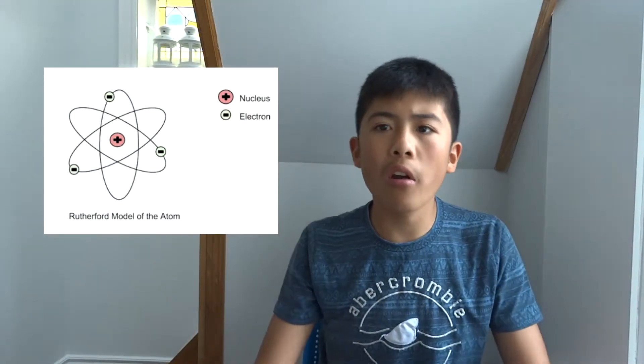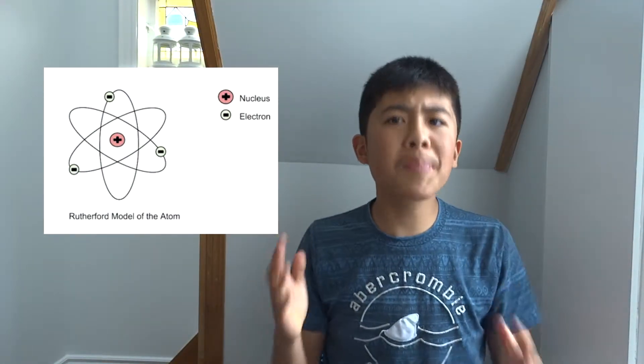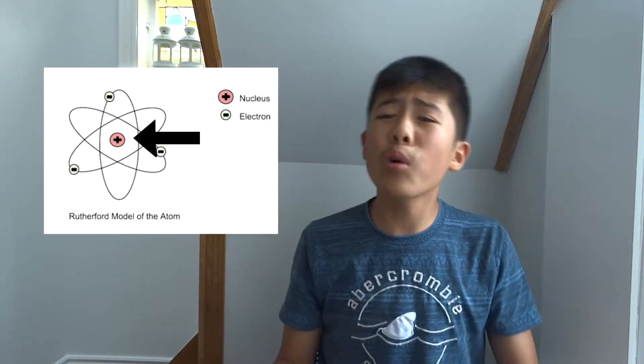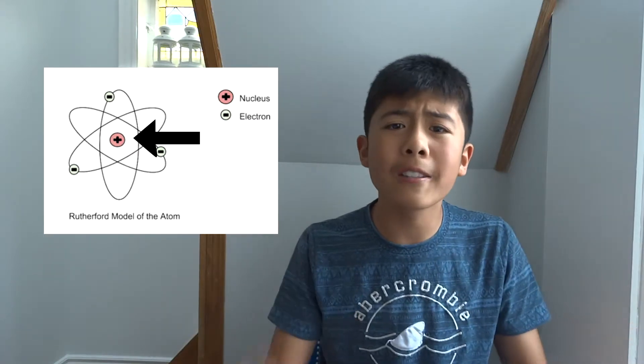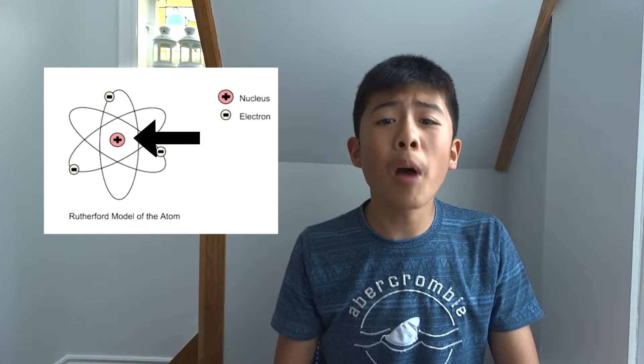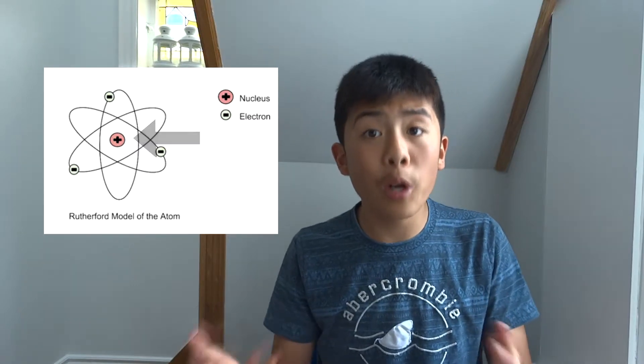Rutherford used this information and came up with a new atom model. He proposed that there must be a concentration of positively charged particles in the center of the atom that will cause the alpha particles to deflect. He called this the nucleus, and it contained positively charged particles called protons.